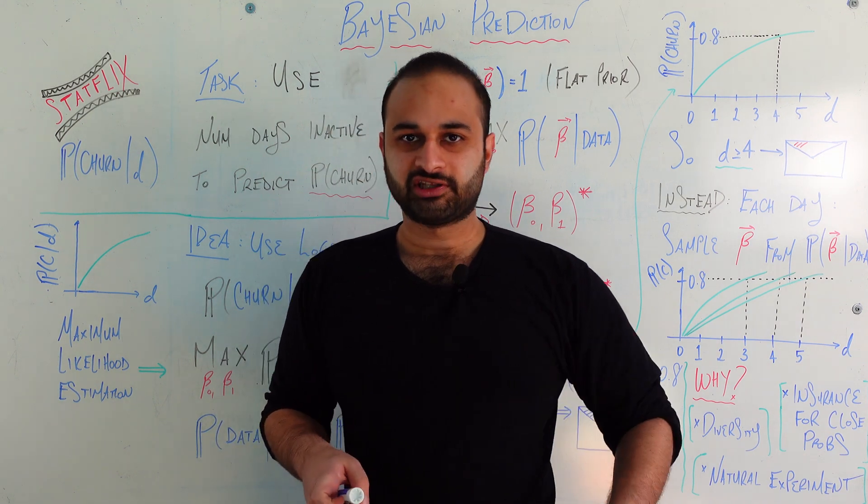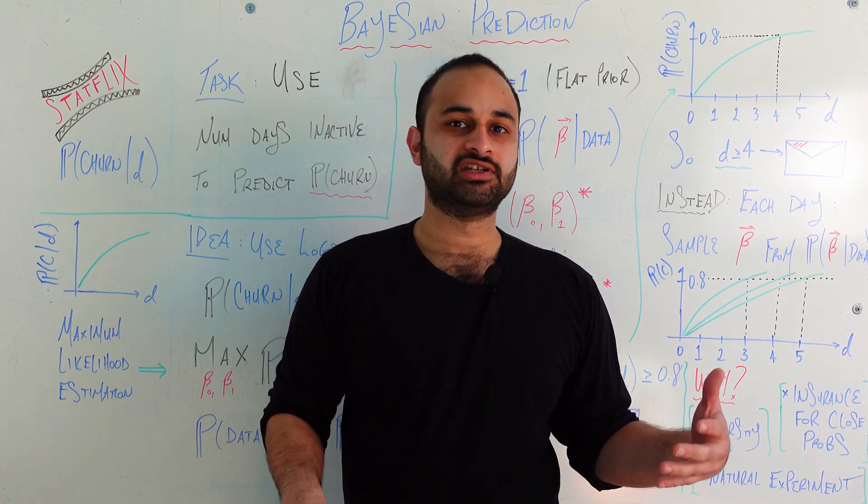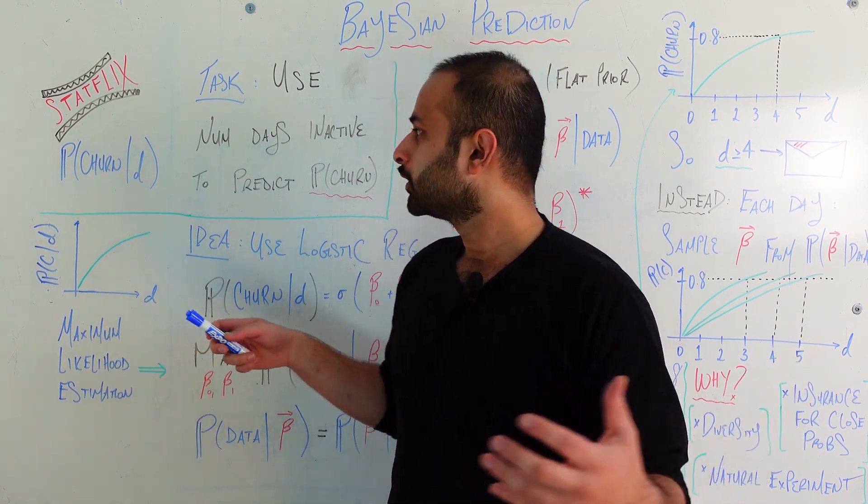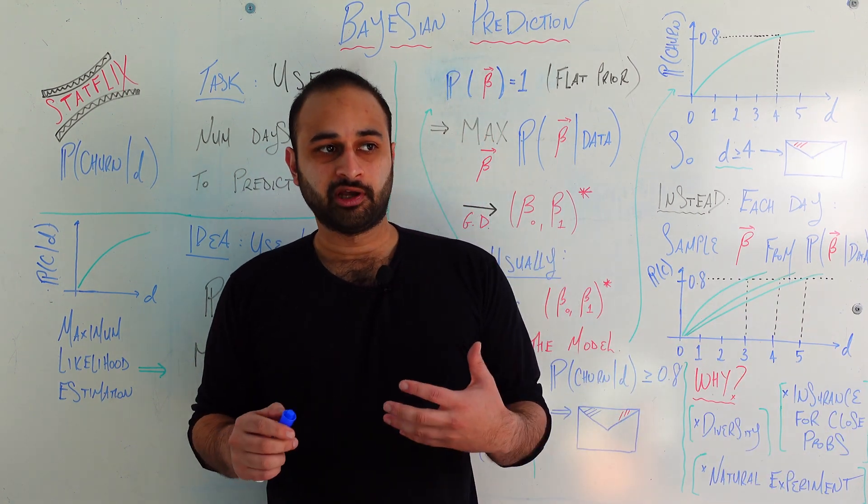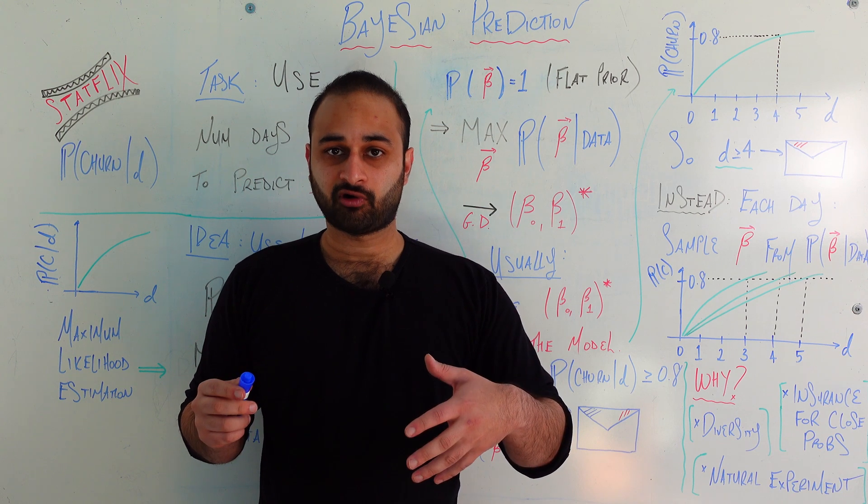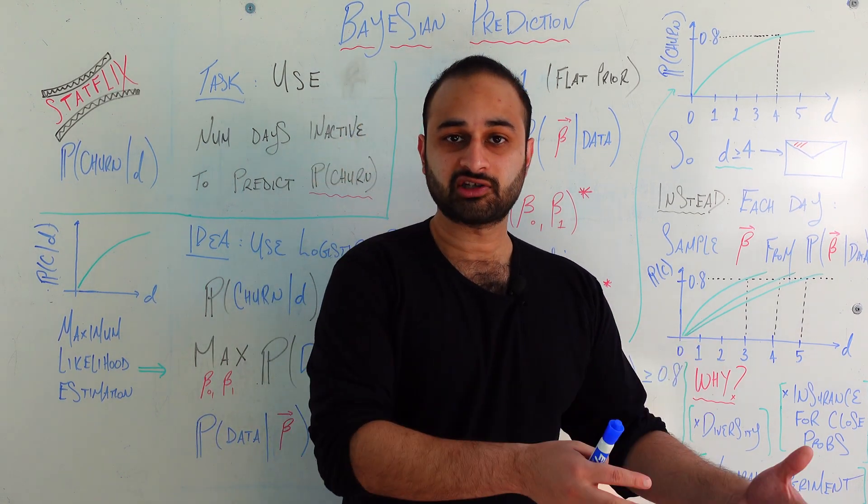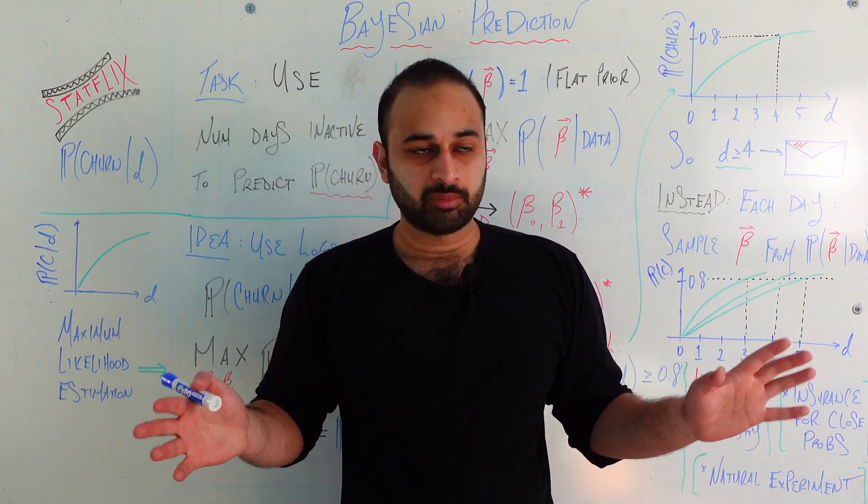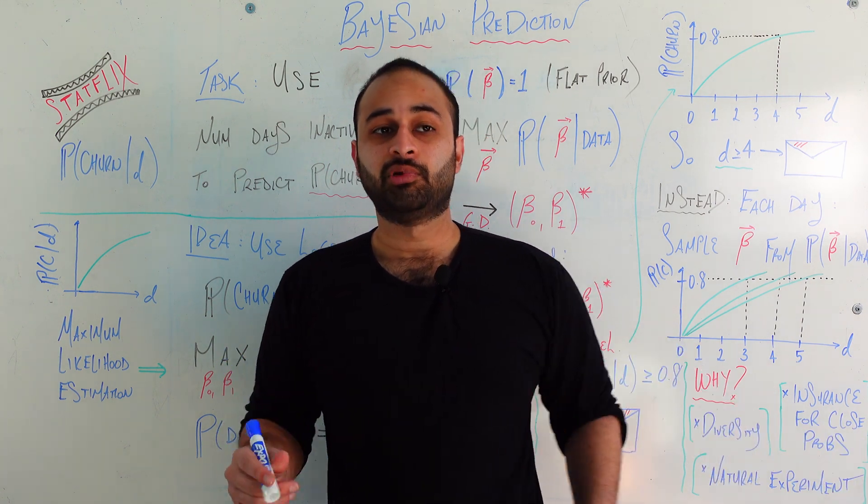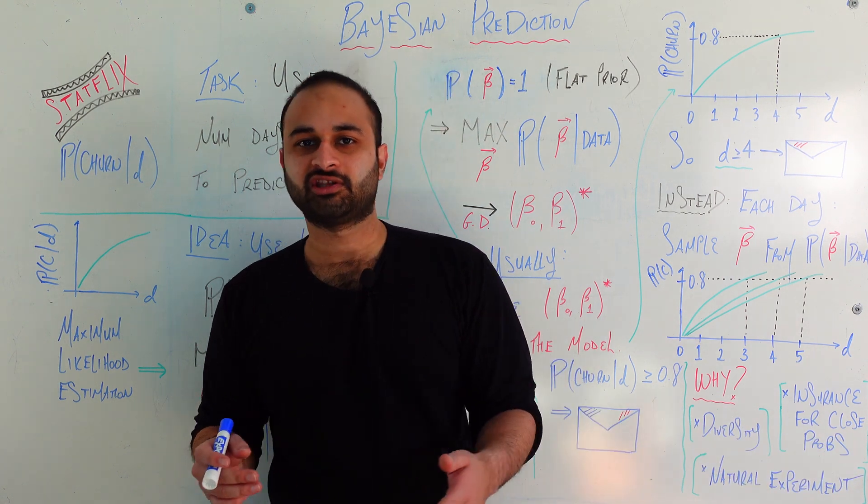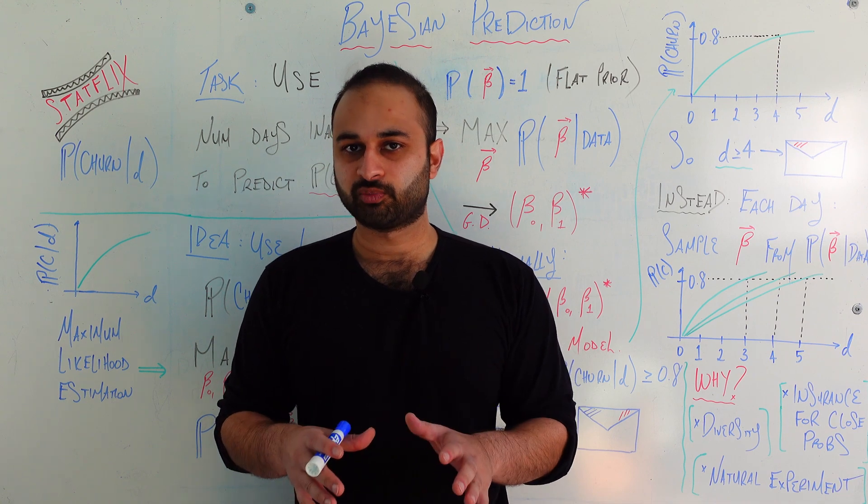So we've used this example before, but let's say you're the data scientist at a cool new streaming service called Statflix, where they stream movies and TV shows about stats. Now let's say you're trying to predict something called churn. Churn, very simply put, is basically when you have a customer who's signed up to your platform, and for whatever reason, they unsubscribe from your platform.